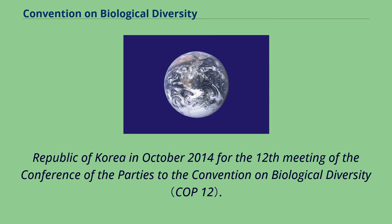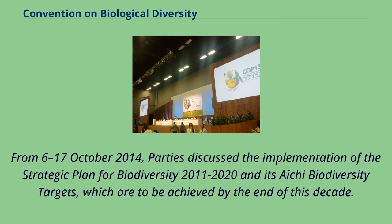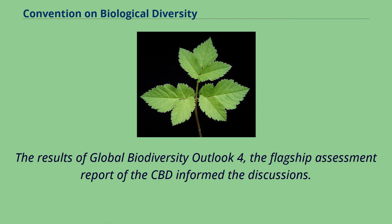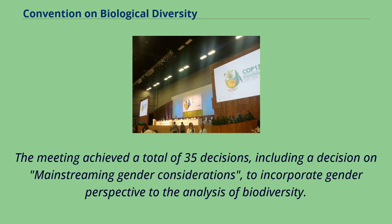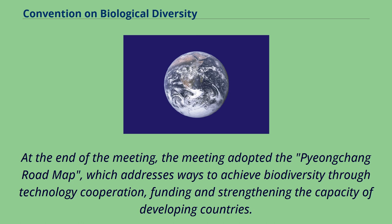From October 6–17, 2014, parties discussed the implementation of the strategic plan for biodiversity 2011–2020 and its Aichi Biodiversity Targets. The results of Global Biodiversity Outlook 4, the flagship assessment report of the CBD, informed the discussions. The conference gave a mid-term evaluation to the UN Decade on Biodiversity Initiative and achieved a total of 35 decisions, including a decision on mainstreaming gender considerations to incorporate gender perspective to the analysis of biodiversity. At the end of the meeting, the Pyeongchang Roadmap was adopted, addressing ways to achieve biodiversity through technology cooperation, funding, and strengthening the capacity of developing countries.